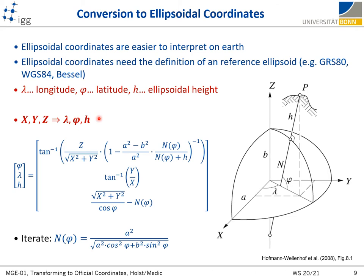Reverse transformation from Cartesian to polar coordinates is more difficult. Theoretically there is a direct solution for this system of equations; however, it is very complicated and therefore practically never used. In practice, the solution is retrieved by iteratively solving the equations given on this slide, where an approximate latitude phi needs to be previously known and iteratively updated or refined.